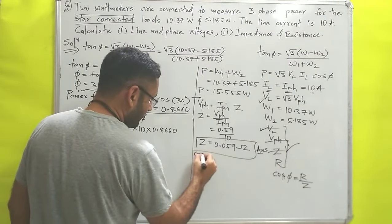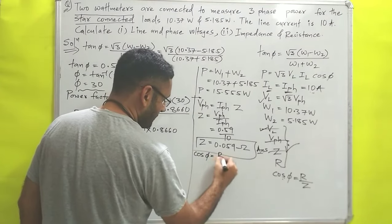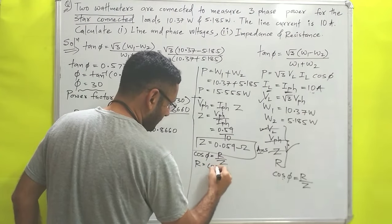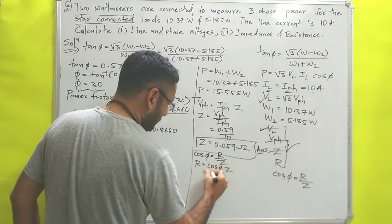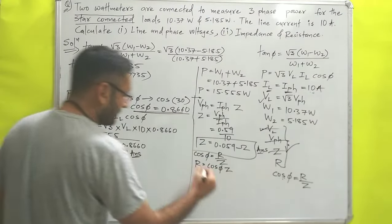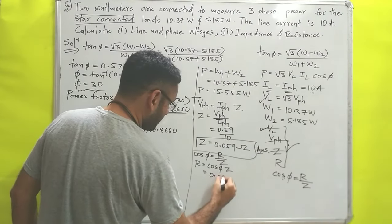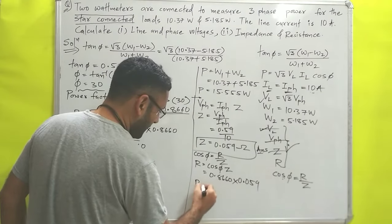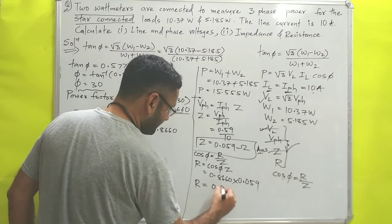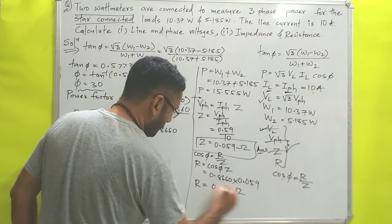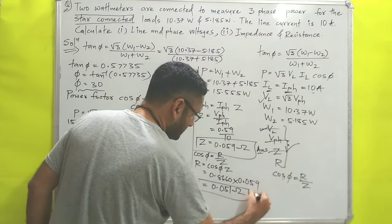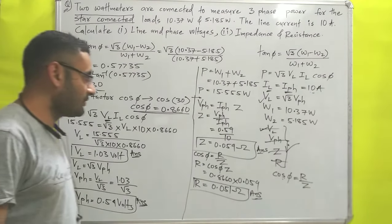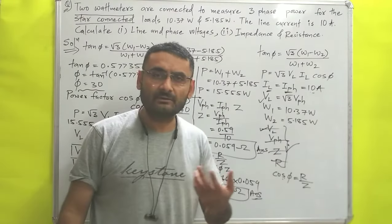Finally, using cos φ = R / Z, we find resistance R = cos φ × Z = 0.8660 × 0.059 ≈ 0.051 ohms. That is the answer for resistance. So we have found all four required answers.